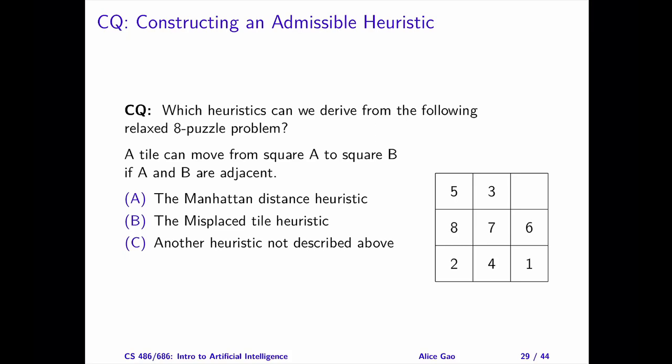For tile 1, its goal position is the top left square. We need 4 steps to move tile 1 to its goal position — for example, up, up, up, left, and left. It's fine for tile 1 to overlap with tiles 6, 3, and 5 along the way, since the target square doesn't have to be empty.